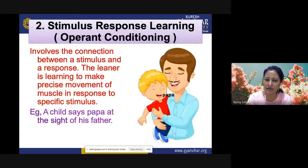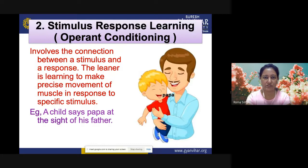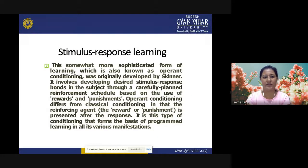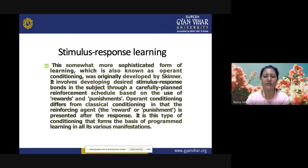Stimulus-response learning is related to operant conditioning, the theory of Skinner, and involves the connection between a stimulus and a response. The learner learns to make precise muscle movements in response to a specific stimulus. Example: a child says 'Papa' at the sight of his father. This is a more sophisticated form of learning, also known as operant conditioning, originally developed by B.F. Skinner. It involves developing desired stimulus-response bonds through a carefully planned reinforcement schedule based on rewards and punishments. The reinforcing agent is presented after the response, forming the basis of programmed learning.